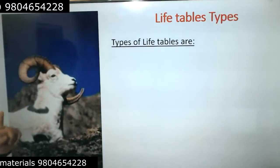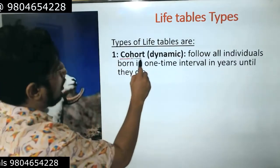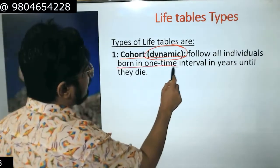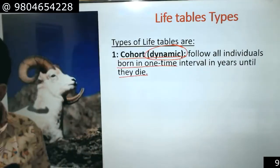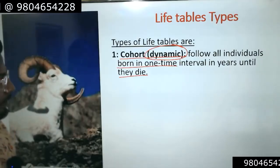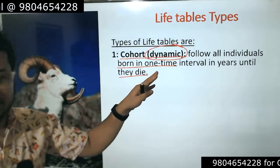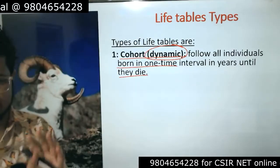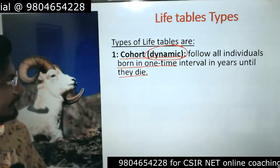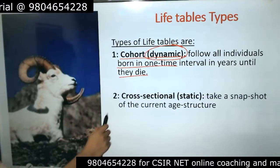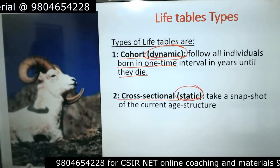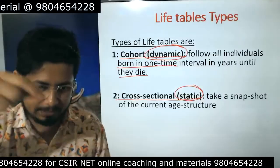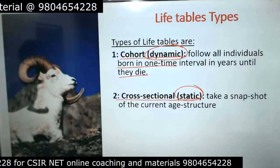There are three types of life tables. The first is the cohort or dynamic life table, which follows all individuals born in one time interval until they die. In a population, you follow all individuals from birth at regular intervals until death — for example, every three years you count survivors until the whole cohort dies. The second is the cross-sectional or static life table — it is a snapshot of the current age structure at a given time, recording how many individuals are surviving at each age.